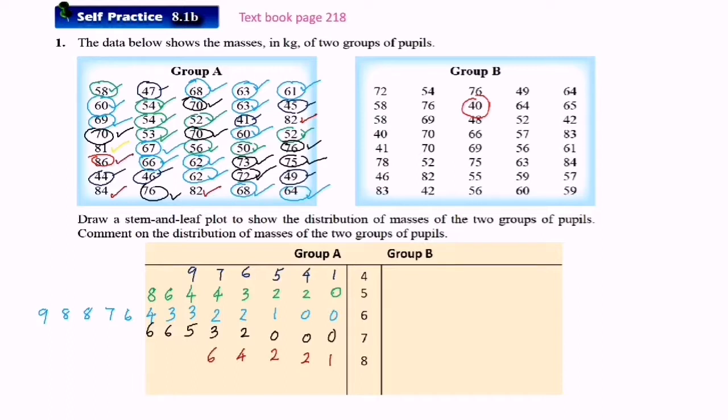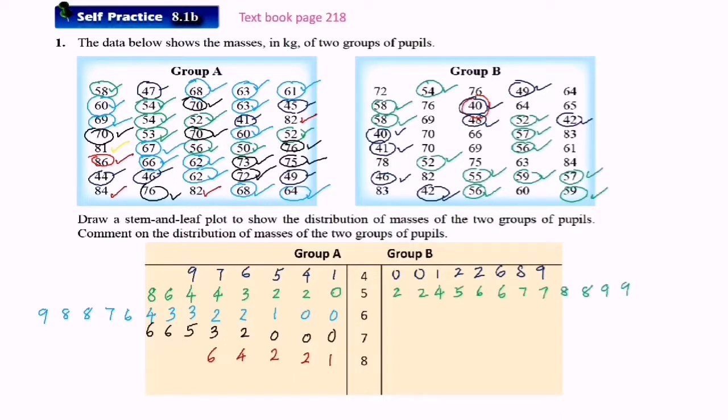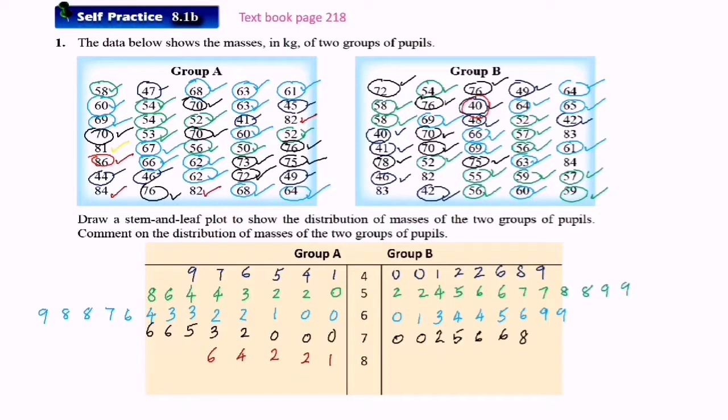After we completed group A, now we go to group B. We do the same thing. We start with 40 to 49. Now we find the numbers from 50 to 59. Next we find the numbers from 70 to 79. The last is 80 to 89.